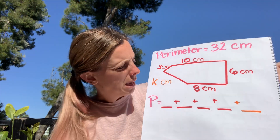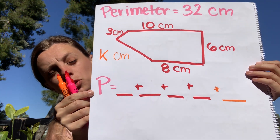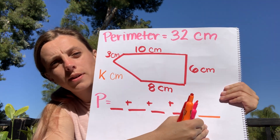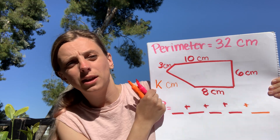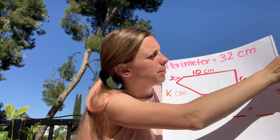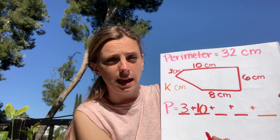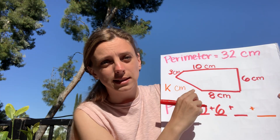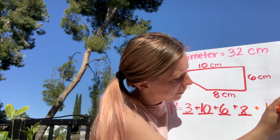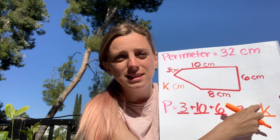I'm going to jump into this polygon right here. This one has five sides. If you want to pause here to take a minute to draw it, go ahead. I've already set up my equation — perimeter equals, with five spaces for the five sides. The missing side this time is called K. I have sides of 3 centimeters, 10 centimeters, 6 centimeters, and 8 centimeters, plus the missing side K. So the perimeter equals 3 plus 10 plus 6 plus 8 plus K.